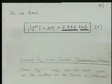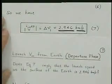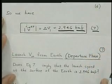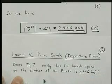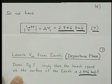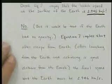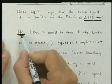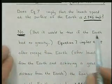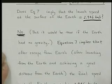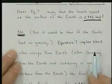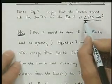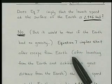Let me just keep that on the page here and ask this question. Does equation 7 imply that the launch speed at the surface of the Earth is 2.946 kilometers per second? The answer is no. But it would be true if the Earth had no gravity. So if we were launching off of an asteroid that has essentially no gravity, this is the number we would need, 2.946 kilometers per second.